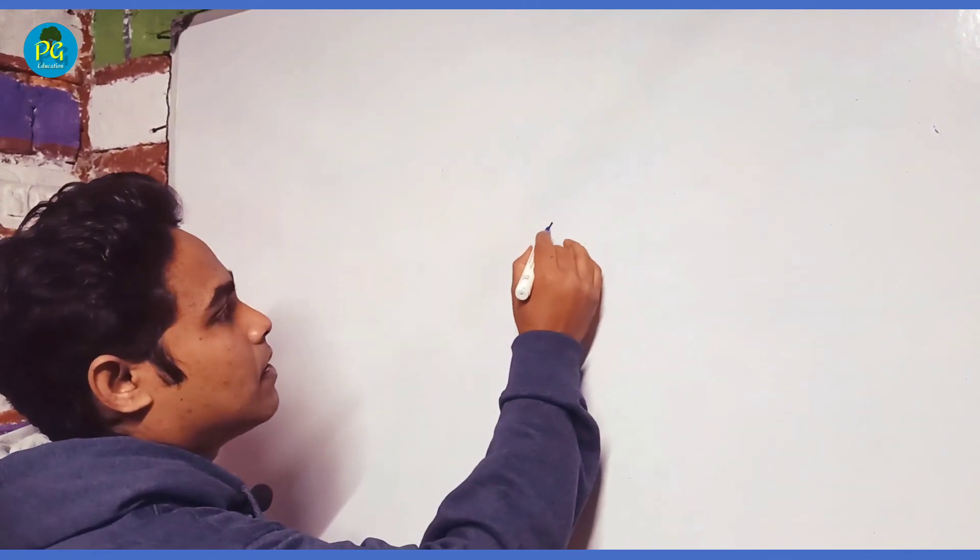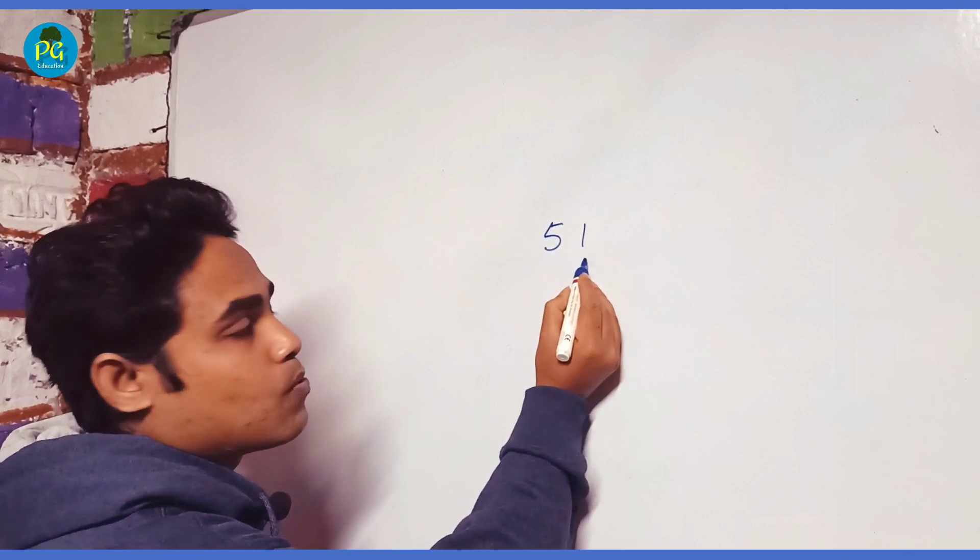Hi friends, welcome to our next video. In this video we will understand how to multiply any two-digit number that ends with 1. That means any two-digit number whose unit digit is 1.